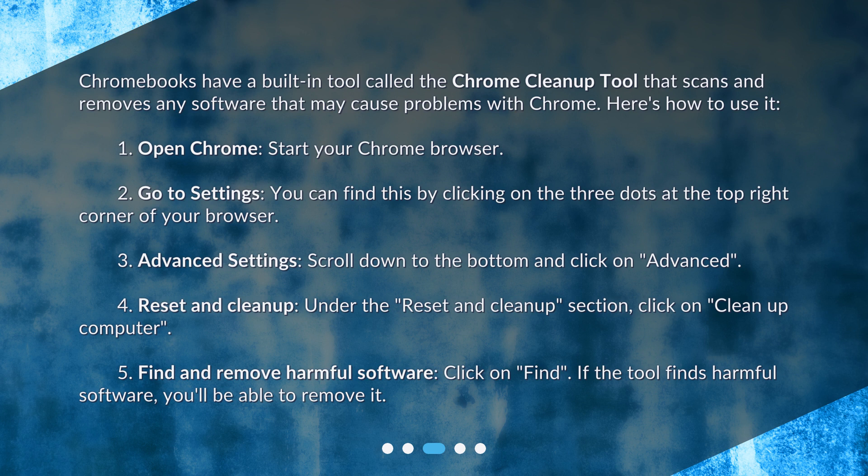Step 4: Reset and Cleanup — under the Reset and Cleanup section, click on Cleanup Computer. Step 5: Find and Remove Harmful Software — click on Find. If the tool finds harmful software, you'll be able to remove it.